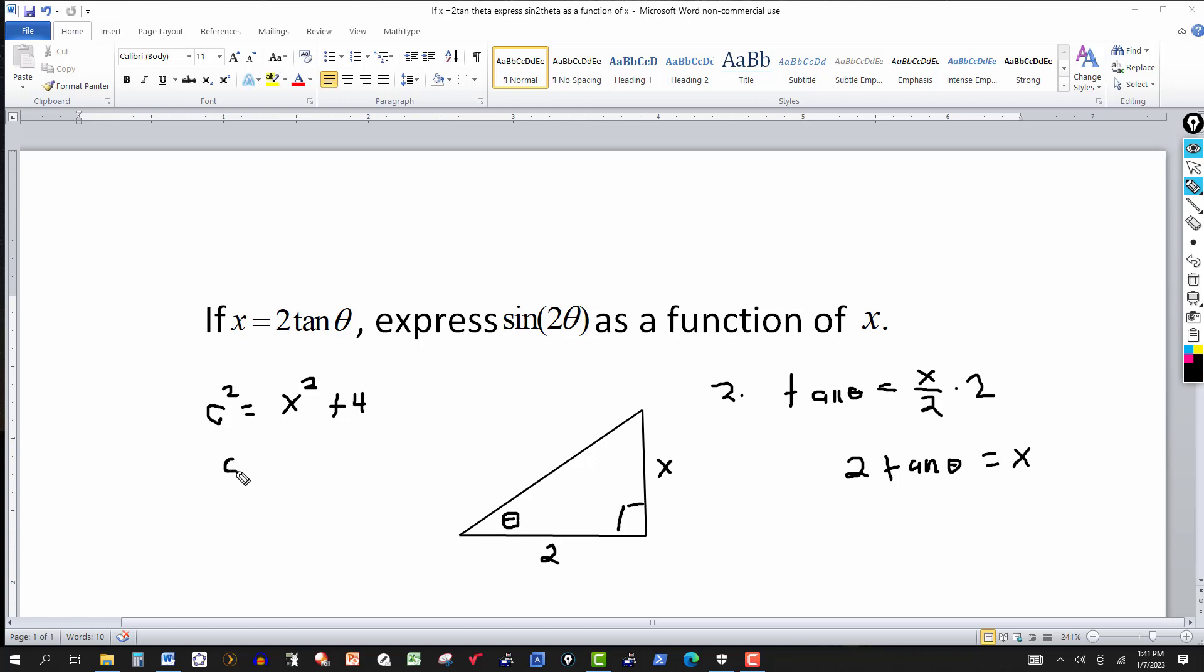So if I take the square root here, and we're dealing with lengths so we want positive. So it's the positive square root of x squared plus 4. I'll just label this side as the square root of x squared plus 4.